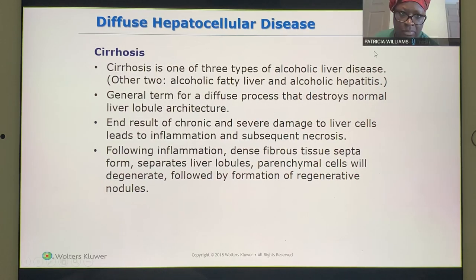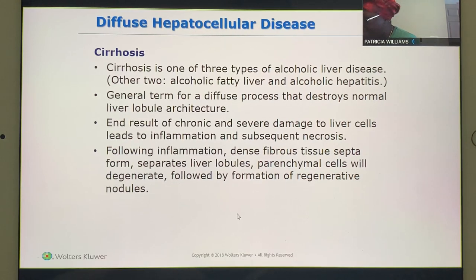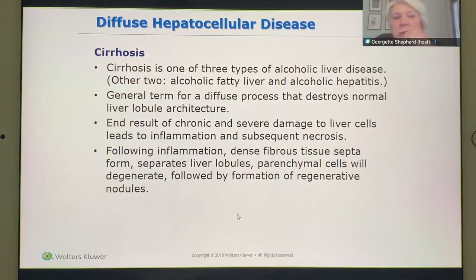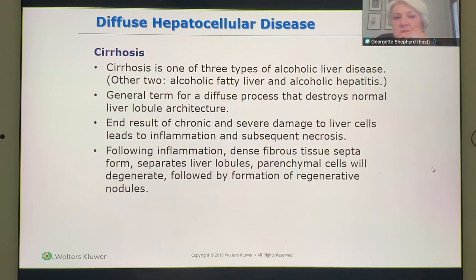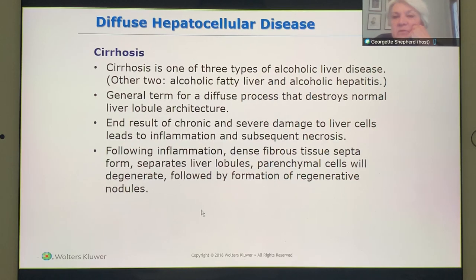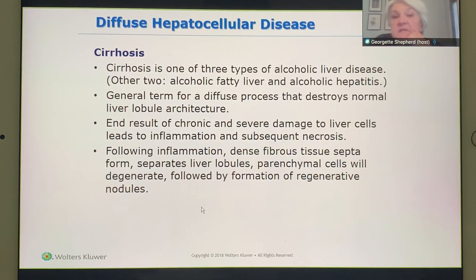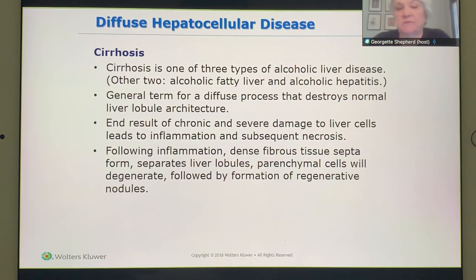Cirrhosis — you have three types: alcoholic, fatty liver, alcoholic hepatitis, and cirrhosis. What happens is the liver architecture has been compromised and it's going to change. The liver cells are dying and that is called necrosis.